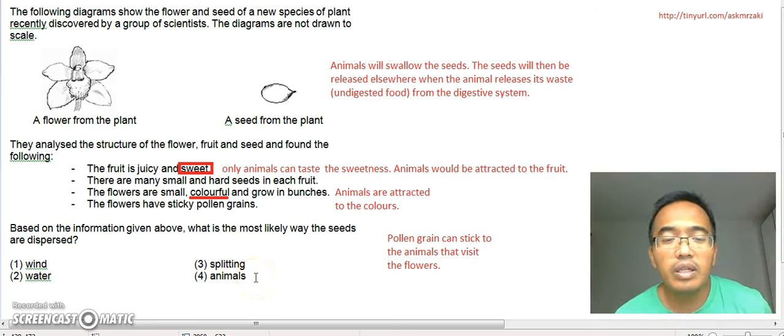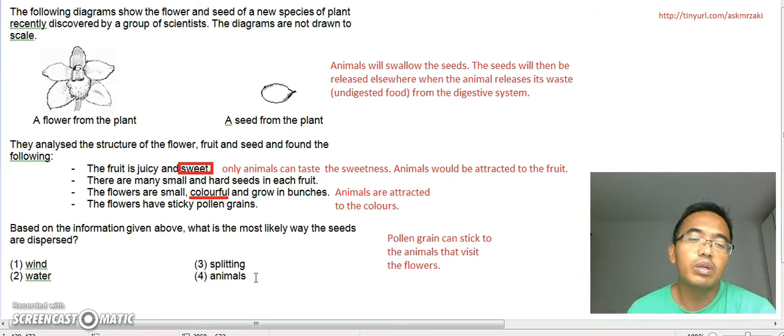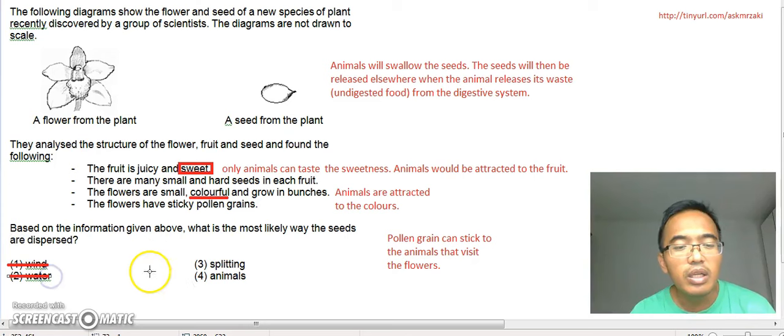By splitting, it must be contained in a hard shell. And only when it dries up, it has to somehow have some explosive action to throw the seeds further away from the parent plant. So none of the information given here supports wind dispersal, none of it supports dispersal by water, none of it supports dispersal by splitting. So obviously the answer is number four, because from all the clues given that should be the answer.